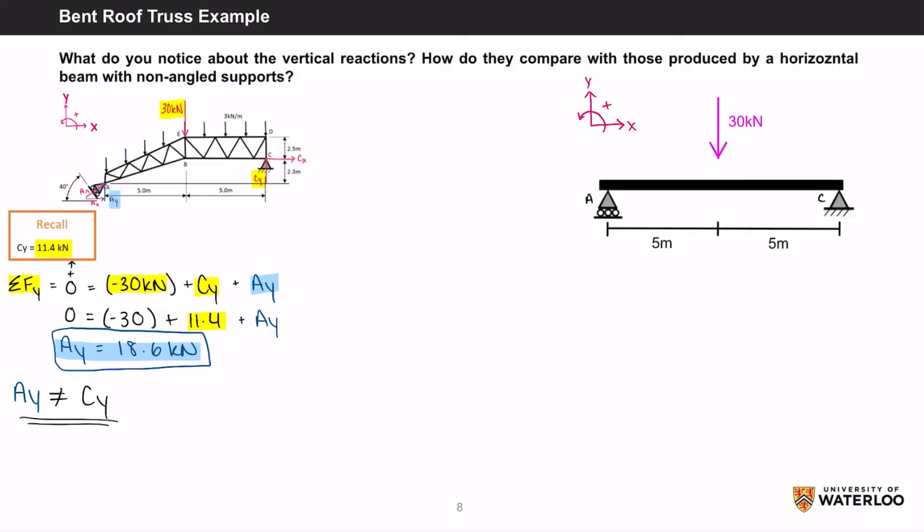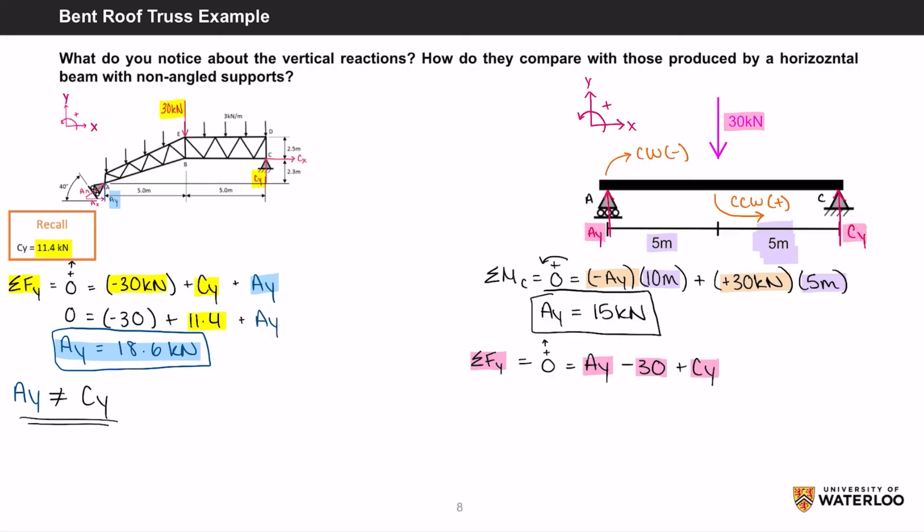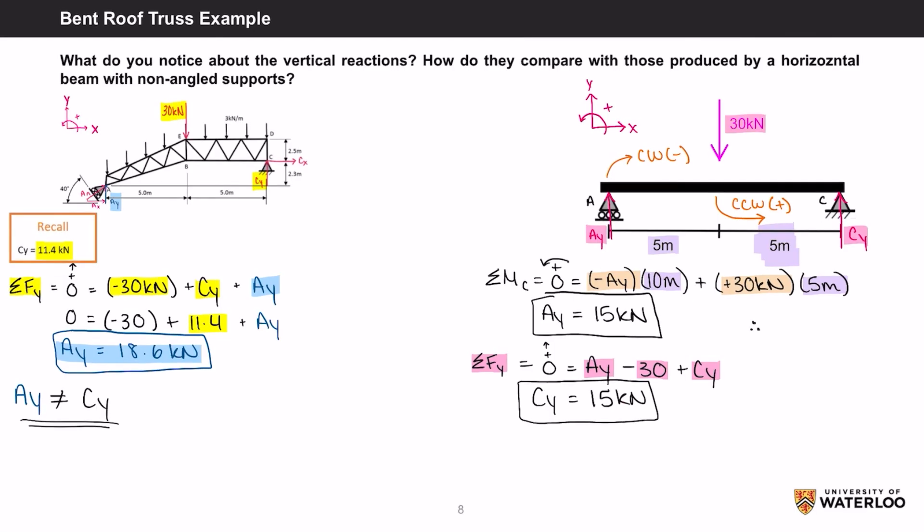If we were to compare it to the same system, but with a straight beam and non-angled supports, the reaction forces for AY and CY should be equal. If you take the moment about C, it equals 0, which equals negative AY times 10 meters plus positive 30 kN times 5 meters as the point load is in the center of the beam. This gives you an answer of 15 kN. Using the equilibrium equation, we can see that the net force in the Y direction is equal to 0, which is equal to AY subtract 30 kN plus CY. Substituting in 15 kN for AY, you get CY equals 15 kN. This tells us that the reaction force of AY equals the reaction force of CY if the supports were not angled.